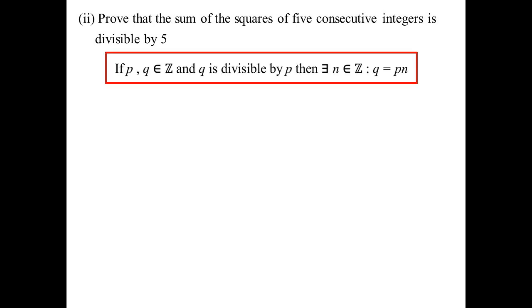Prove that the sum of the squares of 5 consecutive integers is divisible by 5. A key theorem to note: if P and Q are integers and Q is divisible by P, then there must exist a value N such that Q equals P times N. I'm going to let Q equal the sum of the consecutive integers squared, but I've chosen those numbers very carefully.